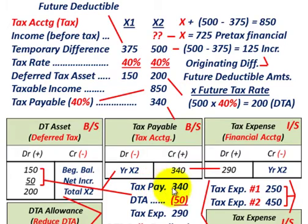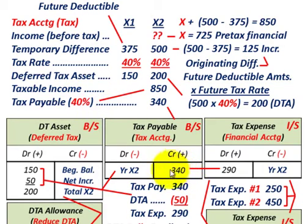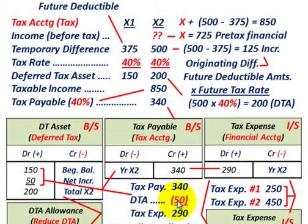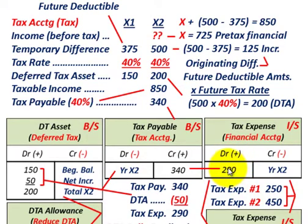Our tax expense is really a plug between our tax payable and our deferred tax asset. We credit tax payable for $340,000, based on taxable income of $850,000 times 40%. Then you have a debit that reduces your tax payable for the deferred tax asset of $50,000. Subtracting the DTA from tax payable gives you tax expense of $290,000.